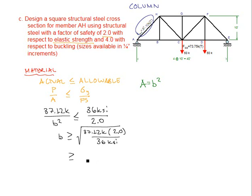Therefore, the side of our square must be greater than or equal to 1.43 inches. Sizes are available in quarter-inch increments so we must round up to the nearest quarter inch, which is 1.50 inches.